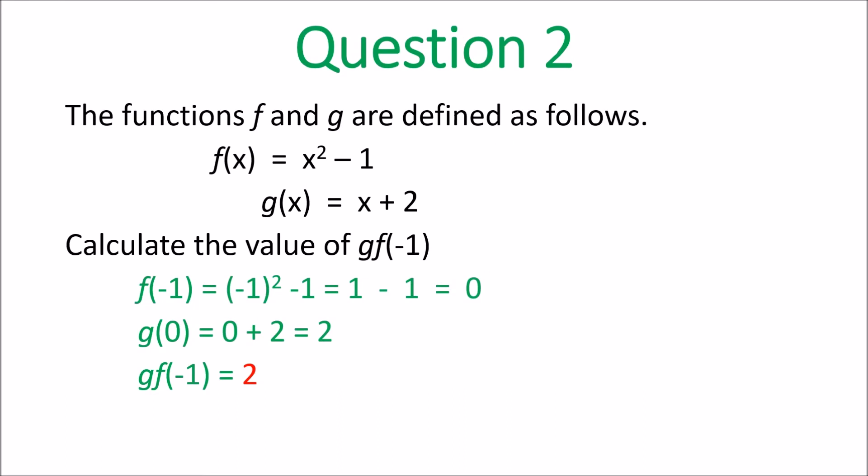Question 2: calculate the value of gf of negative 1 — composite functions. Do f of negative 1 first: go to f of x, put in negative 1, so negative 1 squared minus 1 equals 1 minus 1, which is 0. Now put that value into g of x: 0 plus 2 equals 2. So gf of negative 1 is 2 — that is your final answer.